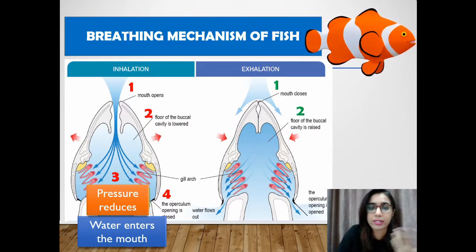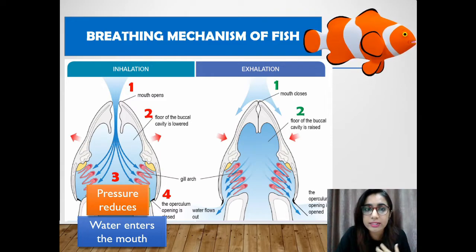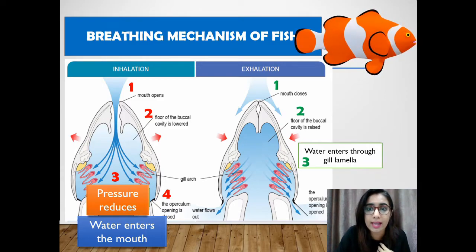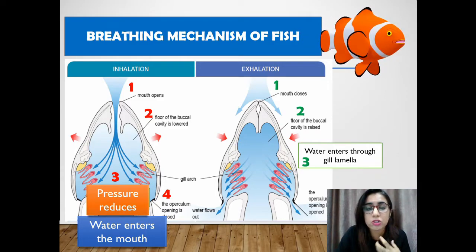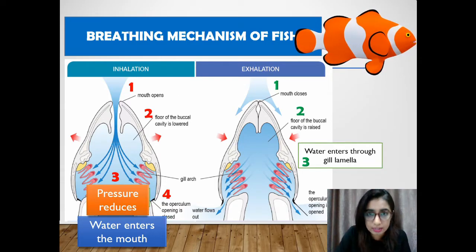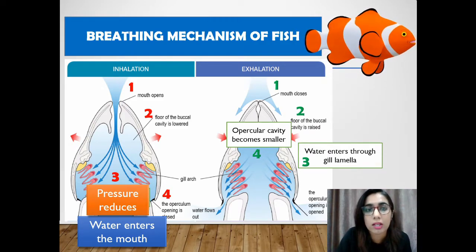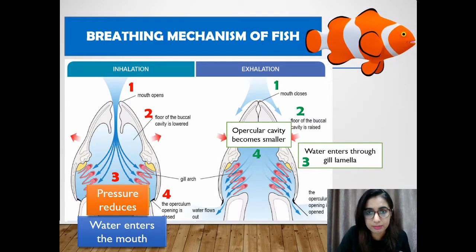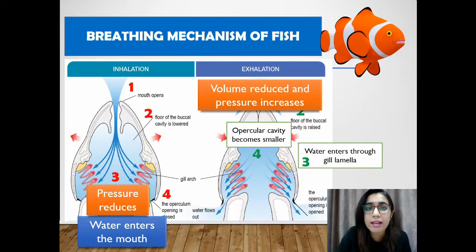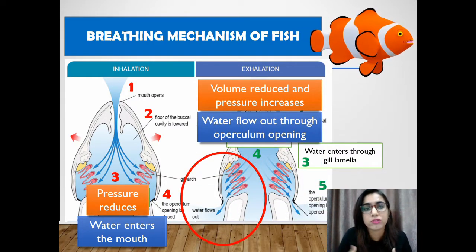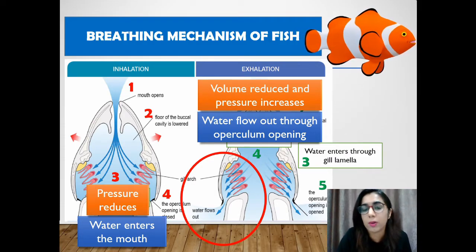During exhalation in fish, the mouth is closed and the floor of the buccal cavity is raised. Water enters through the gill lamina and gaseous exchange between the blood and water occurs through diffusion. The operculum muscles relax, the operculum cavity becomes smaller, pressure in the buccal cavity increases above outside pressure, and water flows out through the operculum opening.